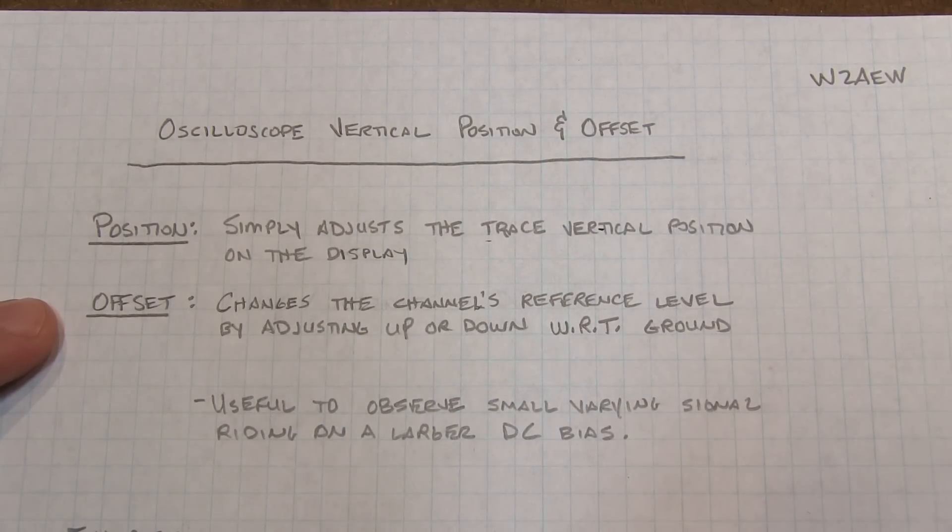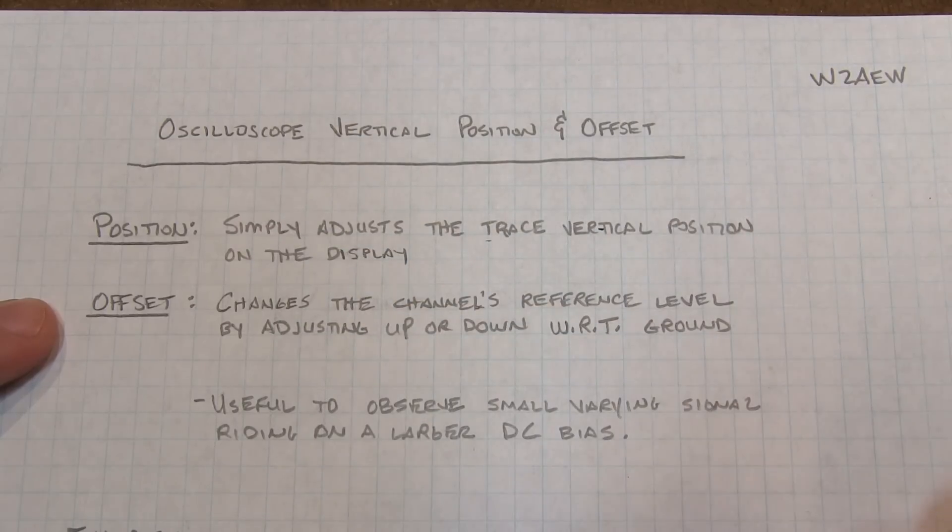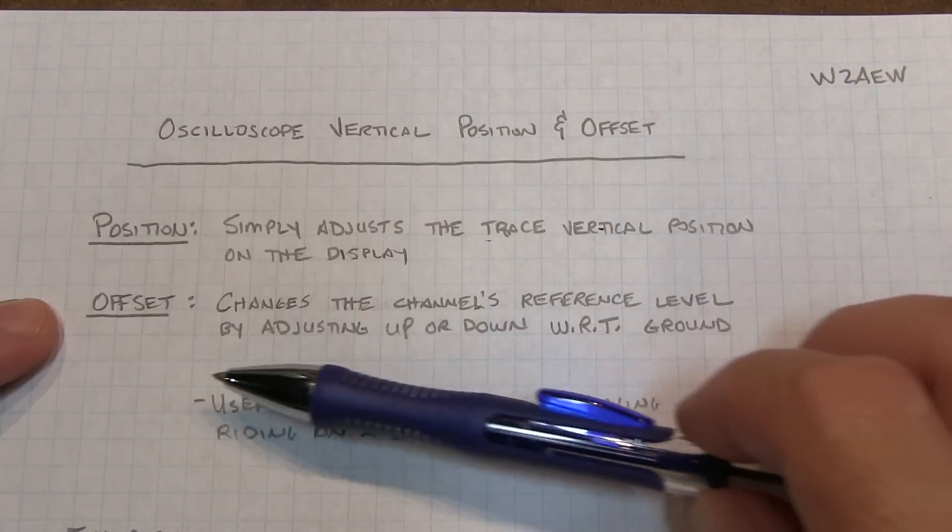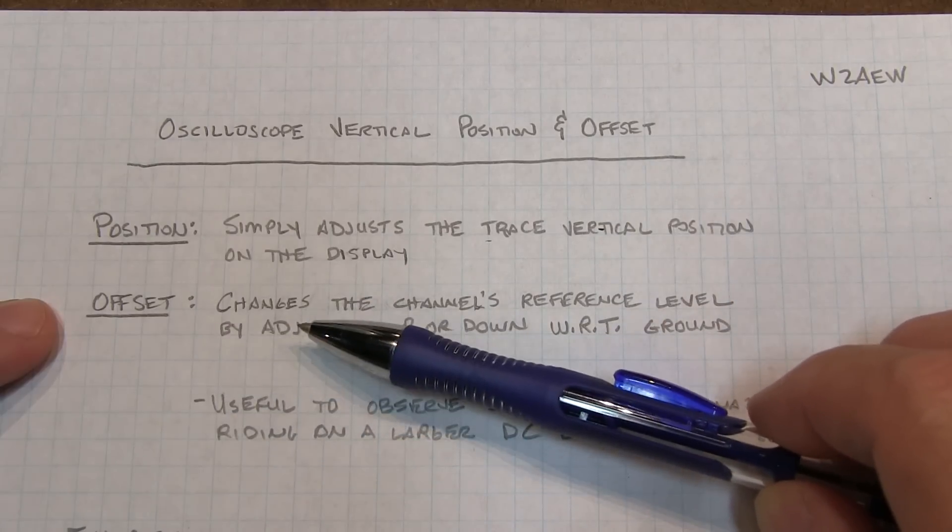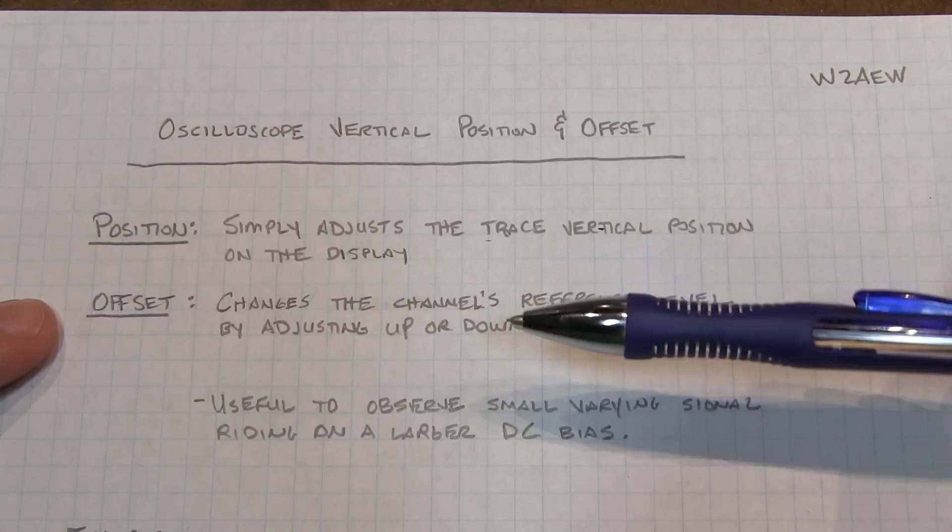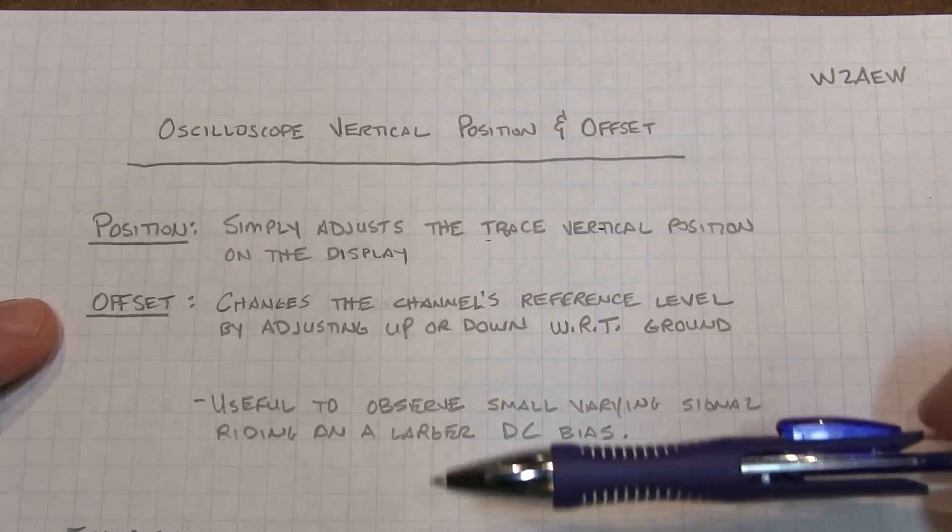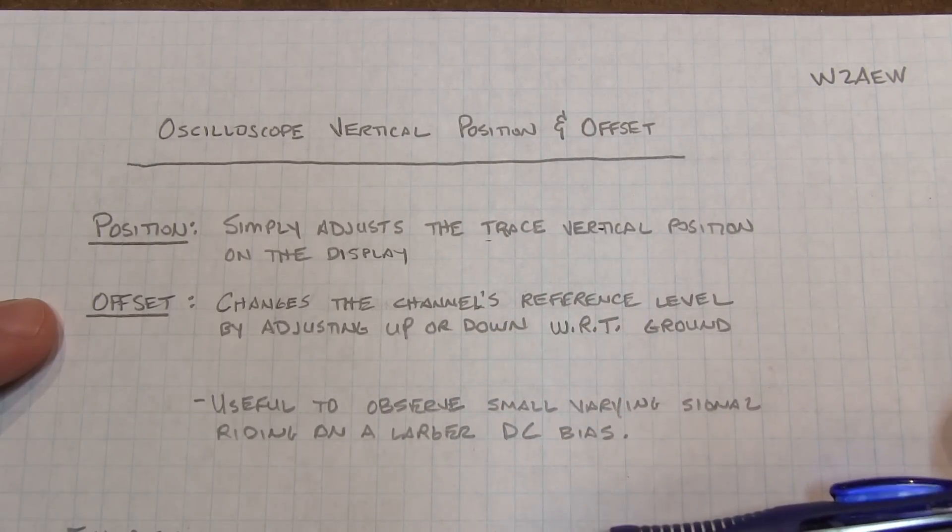The offset control is a little more subtle. It also allows you to adjust the position of your waveform up or down, but it does so by essentially adding or subtracting a DC value from your waveform, effectively changing the scope's reference level instead of the reference level being ground. This will become more obvious when we take a look at an example.